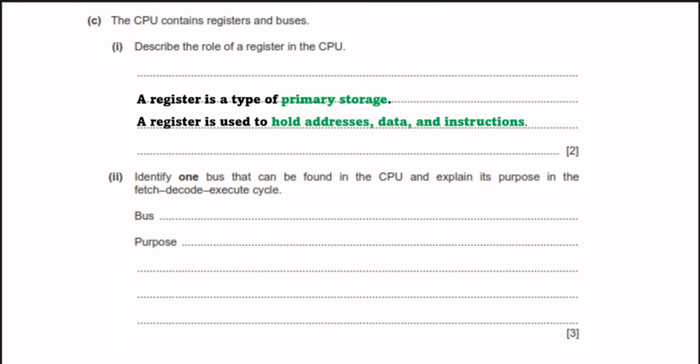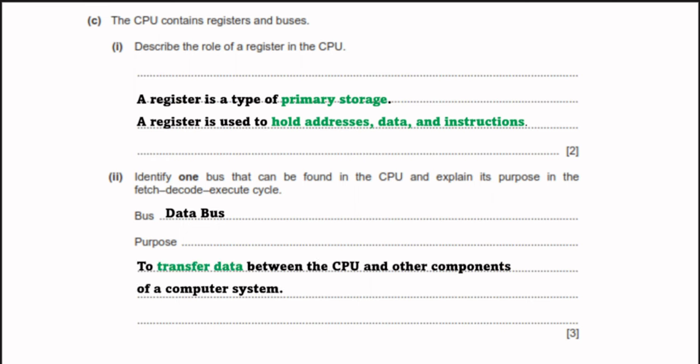Part B: identify one bus found in the CPU and explain its purpose in the fetch-decode-execute cycle. There are three buses: the address bus, the data bus, and the control bus. The data bus transfers data between the CPU and other components. The address bus transfers addresses between the CPU and other components. The control bus transmits control signals to different components in the computer system.